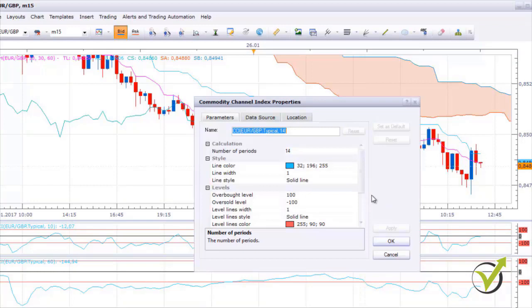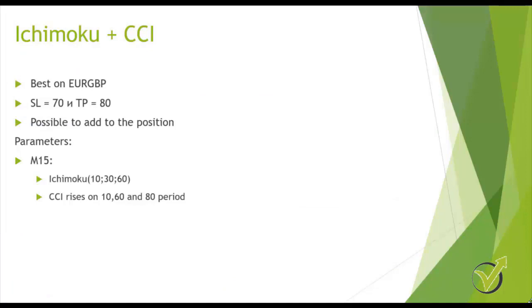You need 3 CCI indicators with periods 10, 60 and 80. With the paper you receive you will see the Ichimoku plus CCI strategy uses a Stop Loss of 70 and Take Profit of 80 pips. It's also possible to add to the position. We use it best on EURGBP on the M15 chart with Ichimoku parameters 10, 30 and 60. The entry condition is that CCI must be rising on all three periods: 10, 60 and 80.